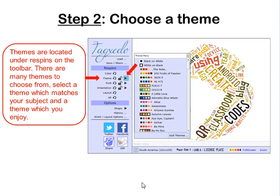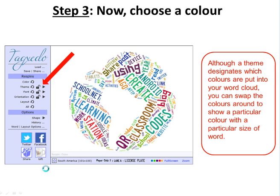Then go to Themes — Themes and Colours seem to work together. A theme has a little arrow next to it and it will show you a number of choices. You decide which colour you want and add it, add themes. Although a theme designates the colours, you can swap colours around to show a particular colour with a particular size of word as well.